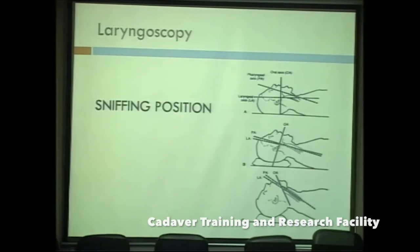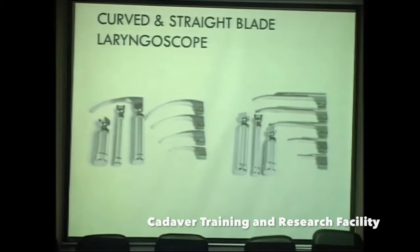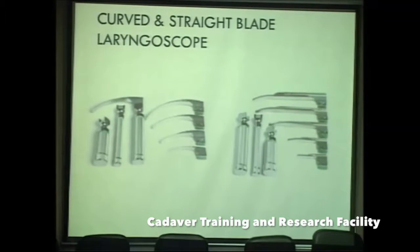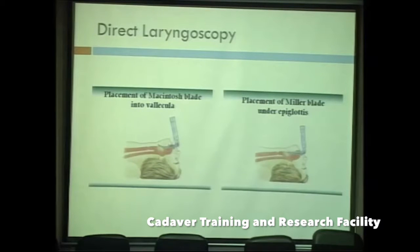Various laryngoscopes were developed over time. The most commonly used are the curved and straight blade laryngoscopes — the standard Macintosh and Miller laryngoscopes. The technique differs between them. With the Macintosh blade, the tip is placed into the vallecula, lifting the epiglottis and visualizing the glottis. With the Miller blade, it goes under the epiglottis directly, lifting it to one side.